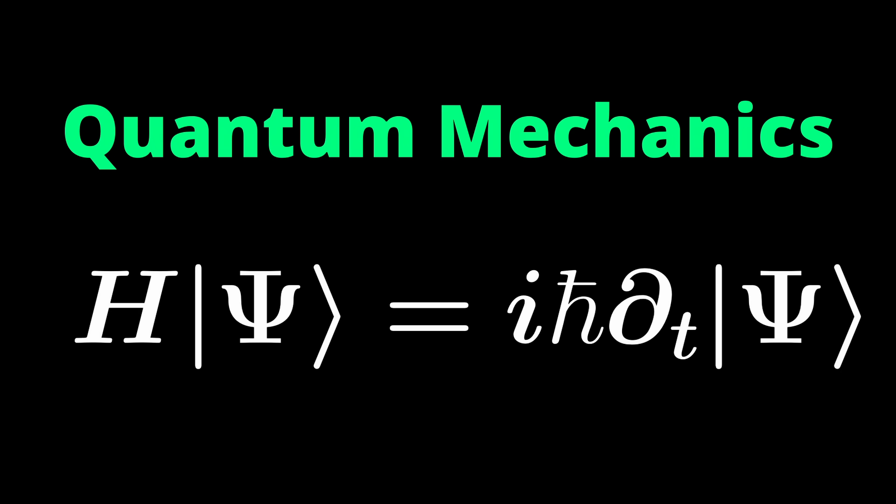Does that sound familiar? That something is undetermined until we measure it? Yes, that's exactly how quantum mechanics works. It's just that in quantum mechanics, we attribute it to a different mathematical property.